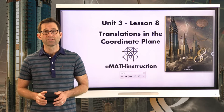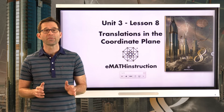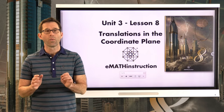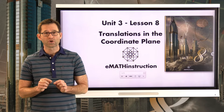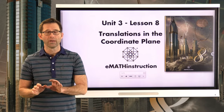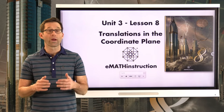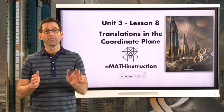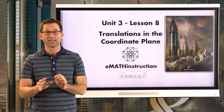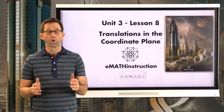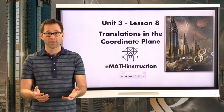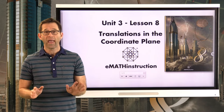In the last lesson we talked about translations and the idea of a vector. A vector is basically a way of describing what direction and how far we should shift all the points in the plane. It doesn't particularly matter where the vector is — a vector is just about distance and direction. The coordinate plane makes translations exceptionally easy to both describe and carry out.